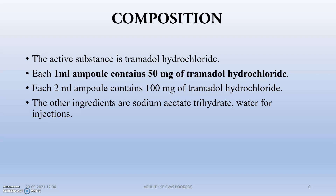Regarding composition, a 1 ml ampoule contains 50 mg of Tramadol hydrochloride, and a 2 ml ampoule contains 100 mg of Tramadol hydrochloride. The 2 ml ampoule is very common in India and in the veterinary field. Other ingredients include sodium acetate trihydrate and water for injections. The active substance is Tramadol hydrochloride.